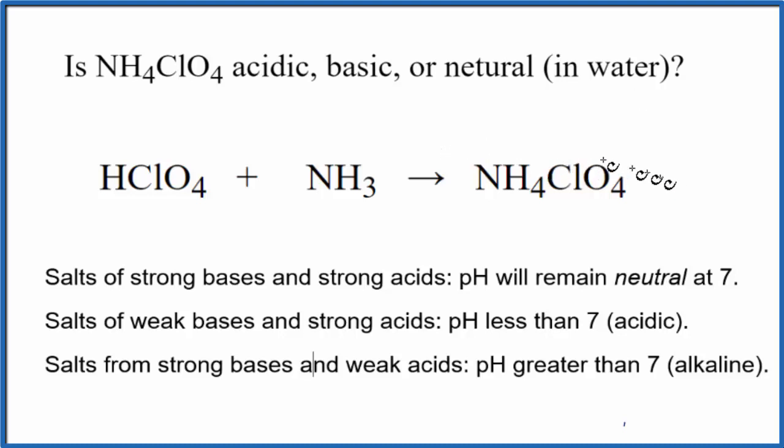So to figure that out, we need to look at the neutralization reaction that produces the NH4ClO4. So we have perchloric acid plus ammonia, that gives us our salt here, our NH4ClO4.